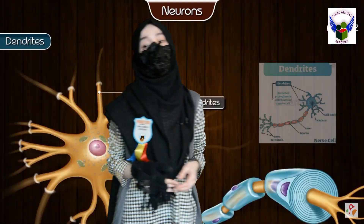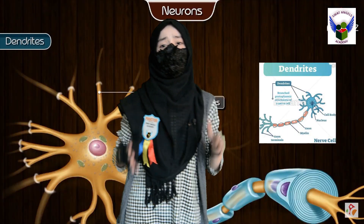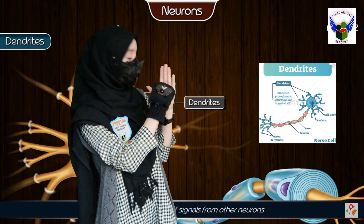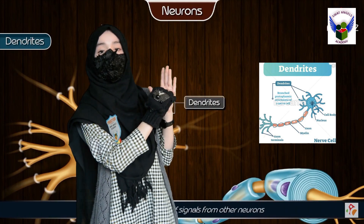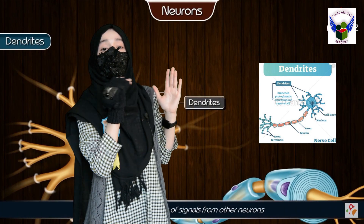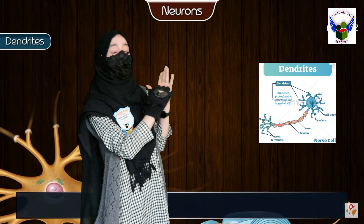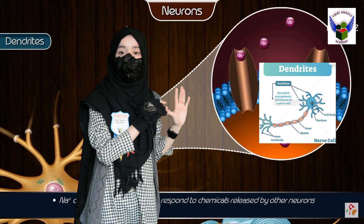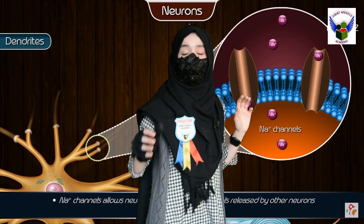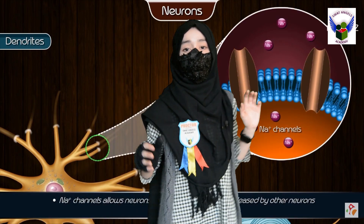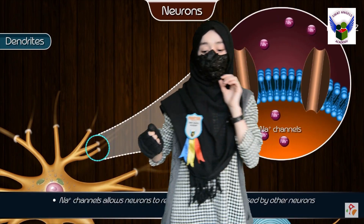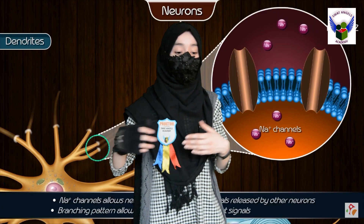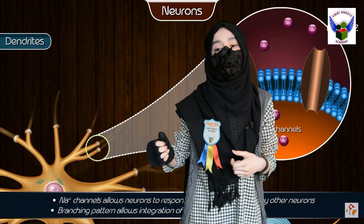Then, dendroids. Dendroids resemble a tree-like structure. At the end of the cell body, there are many branching portions which are called dendroids. This branching portion is the receiving part of the Neuron. Dendroids play a particular role in physiological forces such as memory.